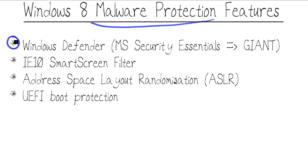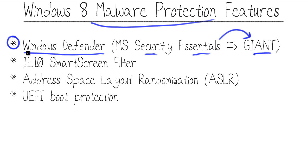First we have Windows Defender. You may know this piece of software as Microsoft Security Essentials. Several years ago Microsoft built Security Essentials from a purchase they made of a separate product called Giant Anti-Spyware. I often recommend to my clients and students to use the free Security Essentials for anti-malware purposes — it's a great piece of software. In Windows 8, however, you cannot install Security Essentials; Windows 8 already includes a built-in malware scanner called Windows Defender.